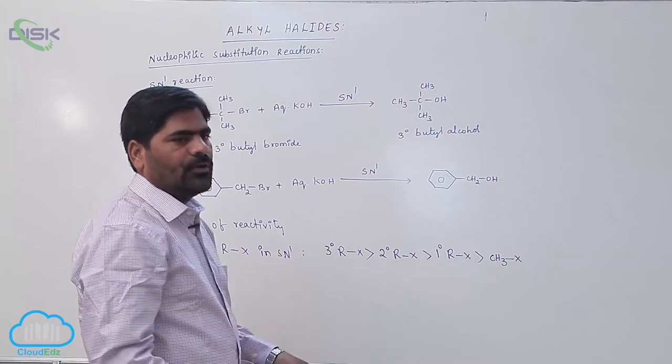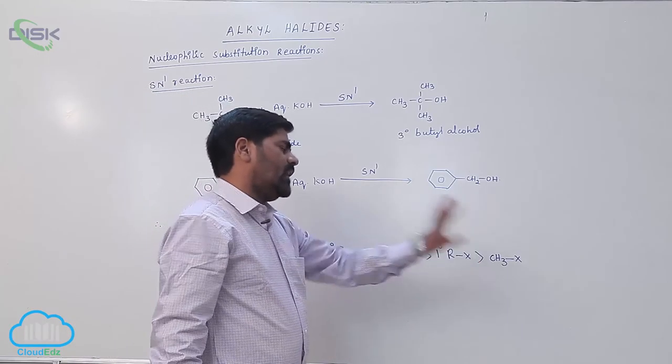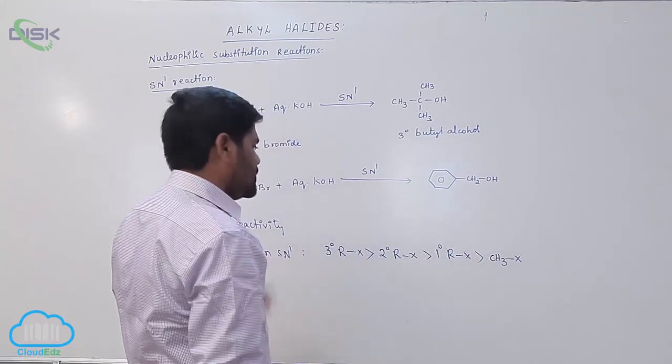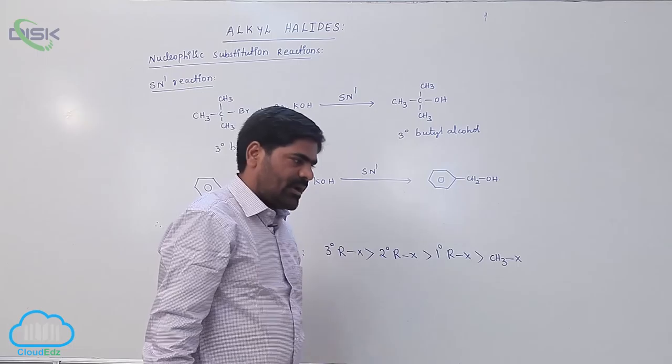Methyl halide. So 3 degree, 2 degree, 1 degree, and methyl halide. This is the order of reactivity of alkyl halides towards SN1 mechanism.